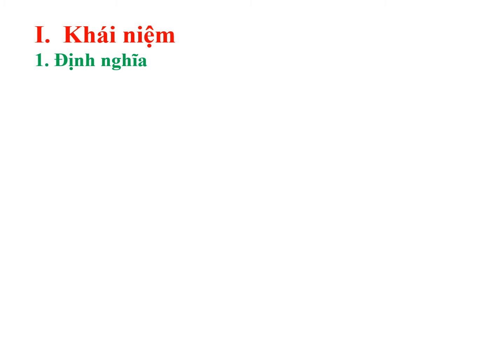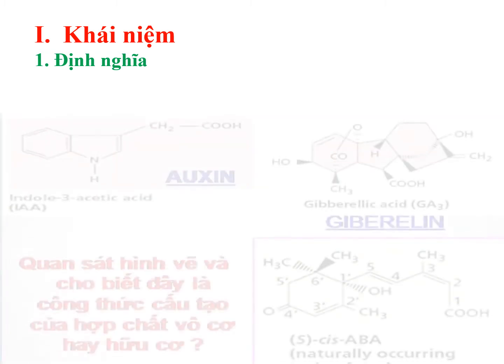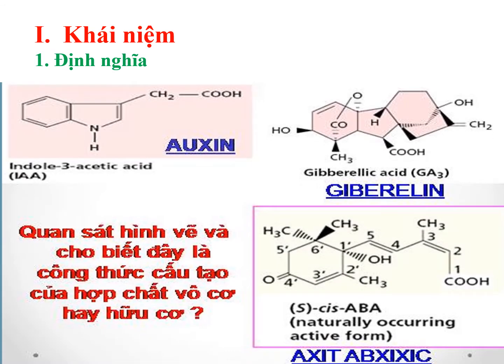Sau đây cô và các em cùng tìm hiểu phần một - khái niệm. Mục một nhỏ: định nghĩa hốc môn thực vật là gì? Các em quan sát hình ảnh về một số loại hốc môn ở thực vật. Qua hình ảnh này chúng ta thấy rằng các hốc môn này được cấu tạo bởi các hợp chất hữu cơ.